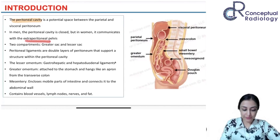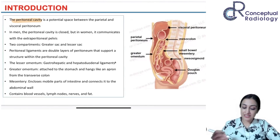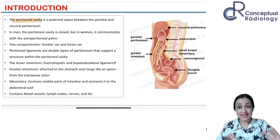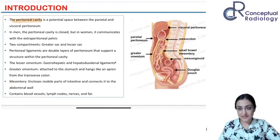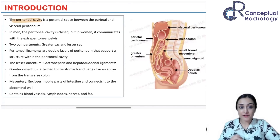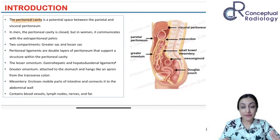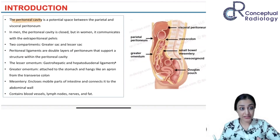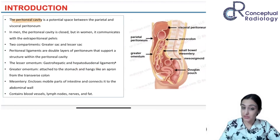In women, because the fallopian tubes have a fimbrial opening, the peritoneum can communicate down through the vaginal opening with the extra-peritoneal pelvis. There are two compartments: the greater sac and the lesser sac. Everything anterior — including the stomach and liver — is the greater sac, and the part behind the stomach is the lesser sac. The lesser omentum consists of two things: the gastro-hepatic and hepato-duodenal ligaments.